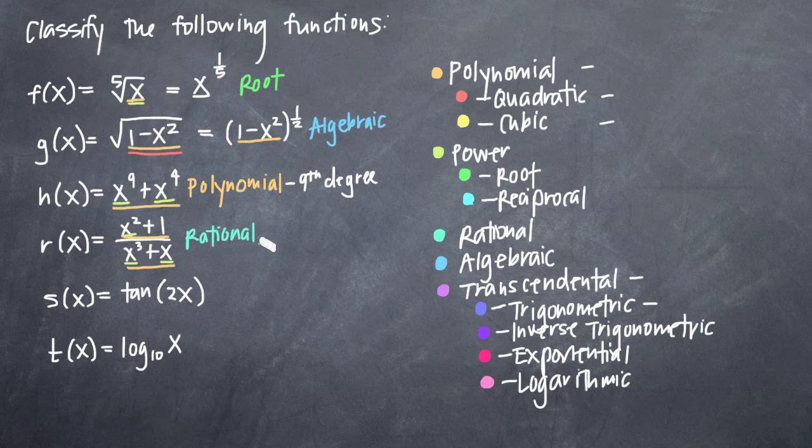The last two, I think, are a little easier than the first four that we've done. Whenever we see tangent, sine, cosine, any of our trigonometric identities, we know right away that we're dealing with a trigonometric function. Trigonometric functions are part of the family of transcendental functions, but obviously we want to be as specific as we can here and call this a trigonometric function.